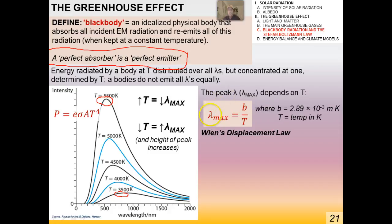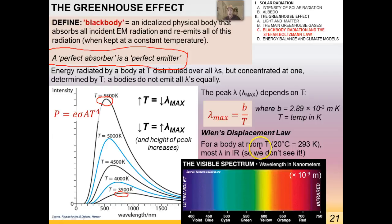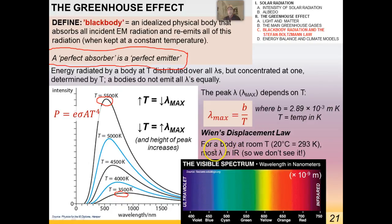There is a mathematical equation relating the maximum wavelength to the Kelvin temperature, called Wien's displacement law. It states that lambda max equals a constant divided by temperature, where that constant is 2.9 times 10 to the minus 3 meters times Kelvin. For a body at room temperature, about 293 Kelvin, most of the radiation that body emits is in the infrared, so we don't see it.